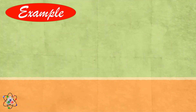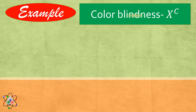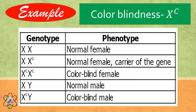An example of an X-linked trait is colorblindness. To illustrate the inheritance, the X chromosome with the gene for colorblindness is represented by XC. Upon looking at this table, you will notice that the allele C for colorblindness is only located at the X chromosome, not in the Y chromosome. Notice that for a female to become colorblind, the two X chromosomes must link with the allele C for colorblindness. If a female has only one X chromosome with allele C, she becomes normal but can pass on the trait to her offspring.